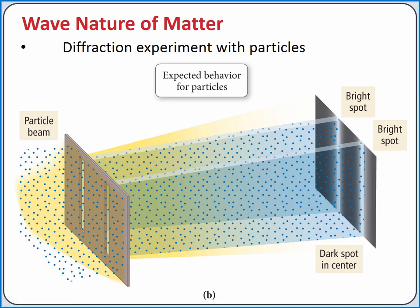We've considered that light, which is typically thought of as a wave, can also act as a particle. We'll now consider how electrons, which are typically thought of as particles, can also act as waves.